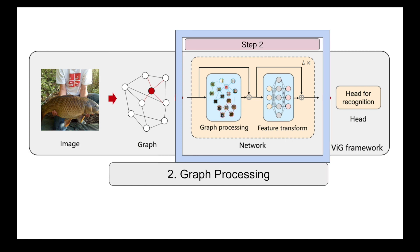The second step will be to understand the graph processing, which is a combination of two different steps: first is the graph processing and the second is the feature transformation, and that is what is going to create the graph neural network. And finally, the output for graph neural network will be the model which can be used for image recognition and object detection tasks.